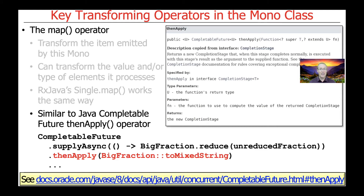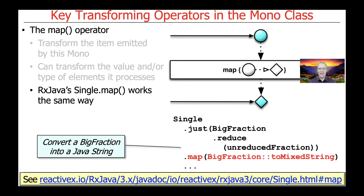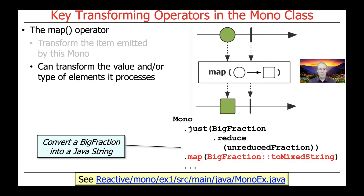In some ways, the MAP method is a bit like the thenApply operator defined as part of Java CompletableFutures. With CompletableFutures, you can start a computation running in the background — in this case, reducing an unreduced BigFraction by calling supplyAsync — and then when the resulting CompletableFuture completes, thenApply converts that improper fraction into a mixed string. The main difference is that CompletableFutures are always asynchronous, whereas what we've seen with Project Reactor's just or RxJava's Single here takes place in one thread of control, due to the semantics of just discussed earlier.